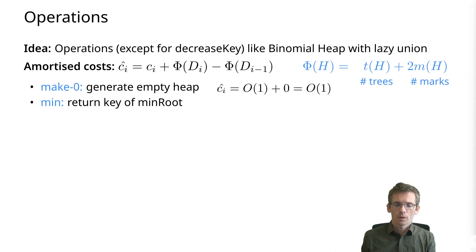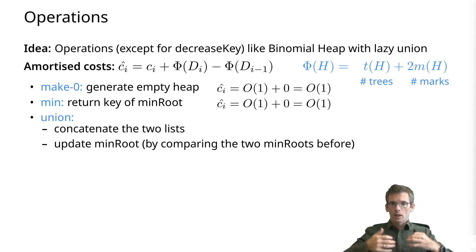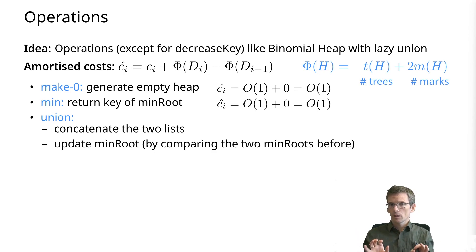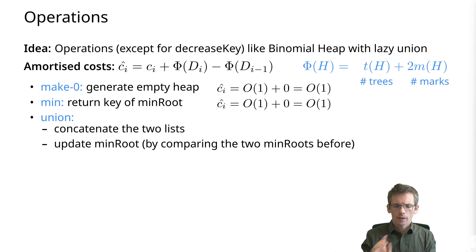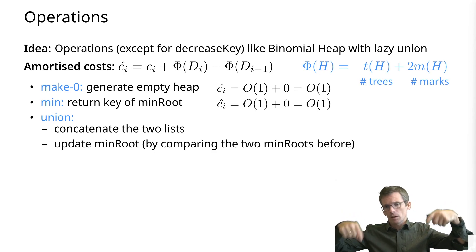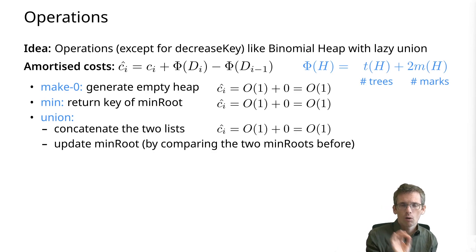Min: we simply return the key of the minimum root. We have a pointer to that, so constant time, no change in potential. Union: we simply concatenate the list of trees — like the lazy union for binomial heaps. We have two Fibonacci heaps which are sets of trees stored in a list; we concatenate those lists, which is a constant time operation. We update the min root by taking the min of the two list minimums. The number of trees does not change, the number of marks does not change, so overall this is constant time.